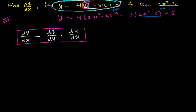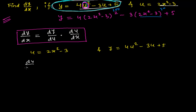Our function u is 2x squared minus 3, and y is 4u squared minus 3u plus 5. Let's find du/dx first. Using the power rule and sum rule: derivative of 2x squared is 4x, and derivative of the constant -3 is 0. So du/dx equals 4x.